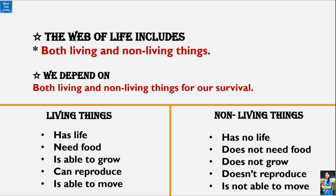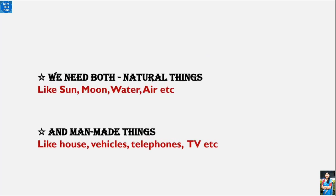Living or non-living things ke alawa, we have learned about one other thing. It is natural things and man-made things. Natural things are the things that we get from nature, like the sun, moon, water, air, and also soil. These are all things that we get from nature. And some things are man-made, like our house, our car, vehicles, telephone, TV, etc. These are man-made things.